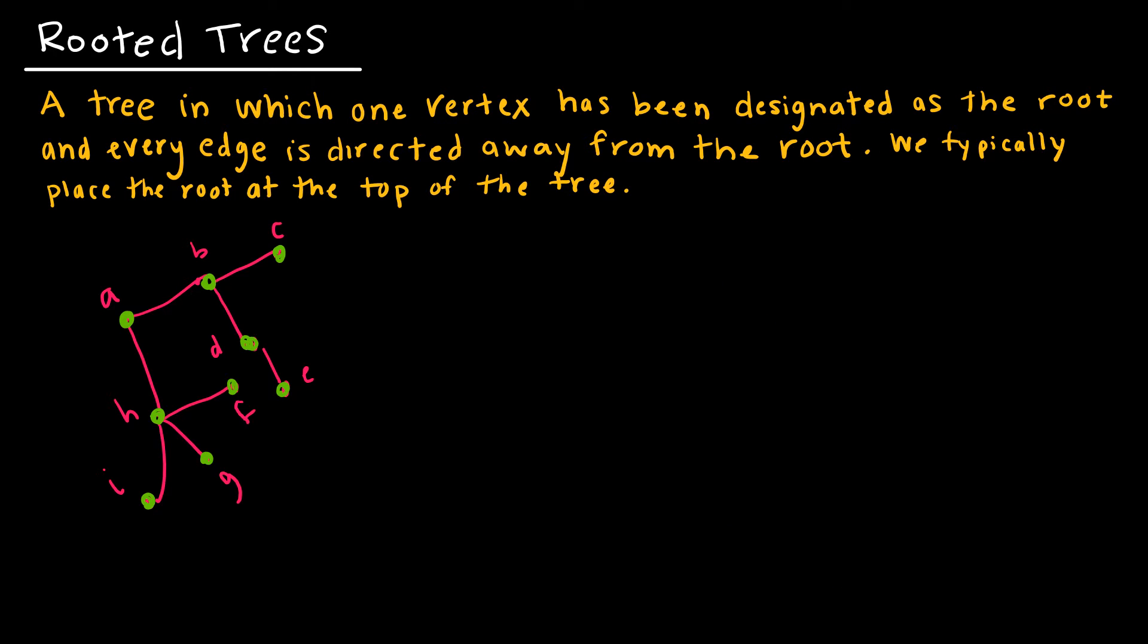So a rooted tree - in the picture, just a heads up, is not a rooted tree yet but it is a tree in which we essentially pick out one vertex to be designated as the root and every other edge is directed away from that root and we typically put that at the top of the tree. So what I'm going to do is I'm just going to choose a random point, one of the vertices that are already on my graph, and then I am going to make a rooted tree out of it.